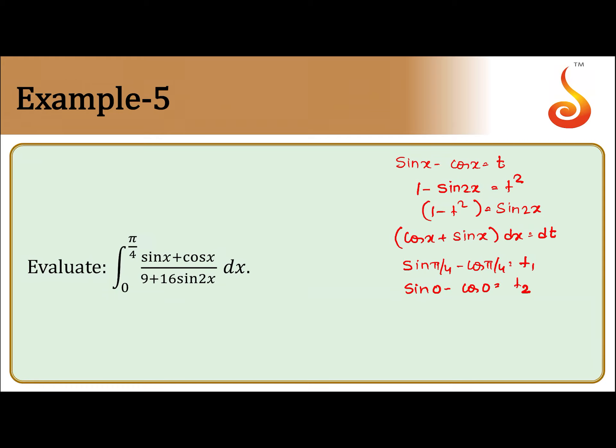So this problem becomes integral from -1 to 0 of dt/(9 + 16(1 - t²)). Clearly this becomes integral from -1 to 0 of dt/(25 - 16t²).